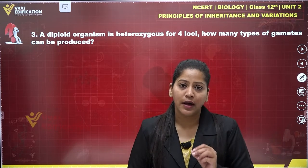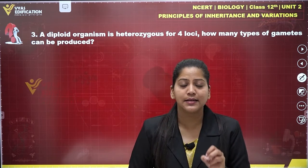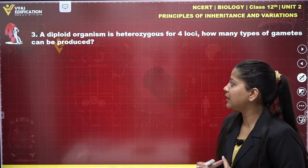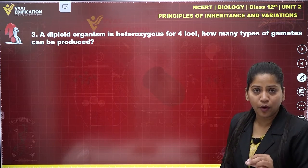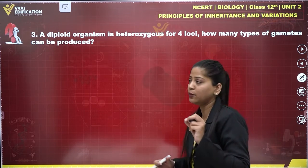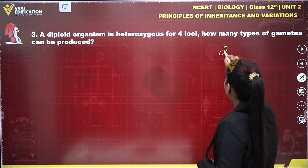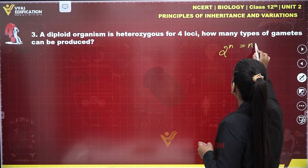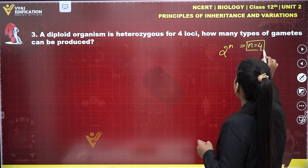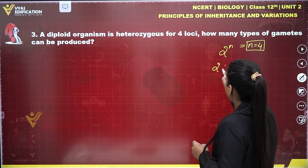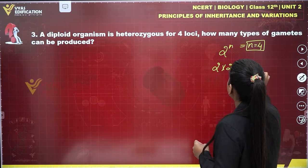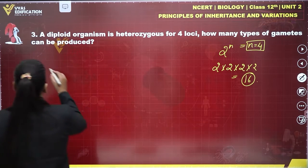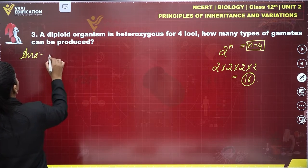The formula is two raised to the power n, where n is the number of heterozygous characters in an organism. In the given condition, n is four. So two raised to the power four gives us 16. The total number of gametes will be 16.